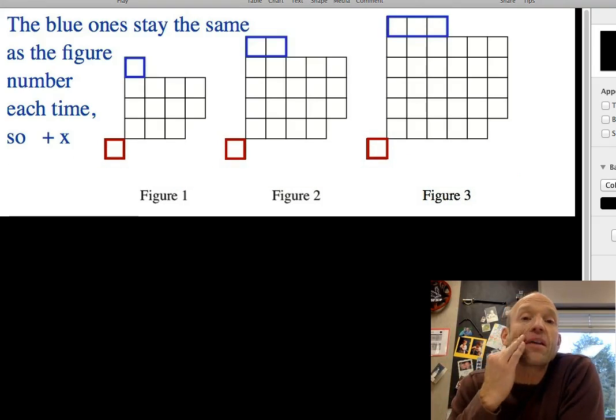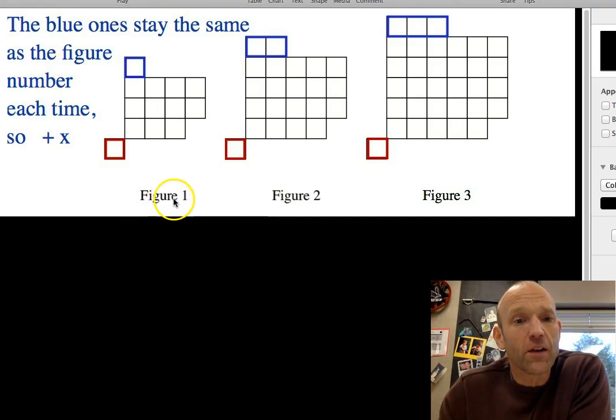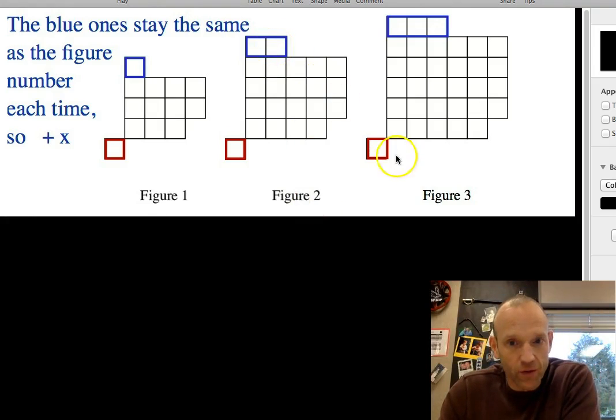Next, I notice this little shape up on the top here. I chose blue here. The blue one stayed the same as the figure number. So figure one has one square, figure two has two squares, and so on. Figure three has three squares.